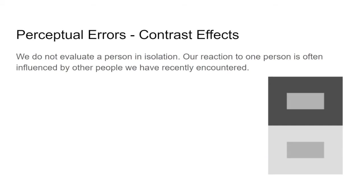The halo effect leads to a positive perspective, but sometimes we can have neutral or negative perspectives too. The contrast effect looks at things relative to one another — we're comparing ourselves against something else. Our reaction to one person is often influenced by other people we've recently encountered. For example, all people from a certain town are nice, so this new person from there must be nice too. We're comparing one against the other.